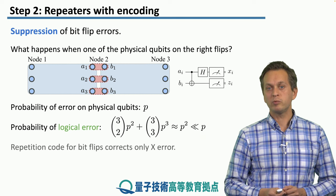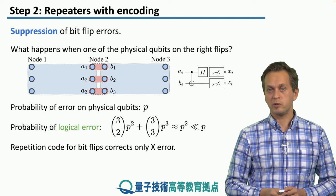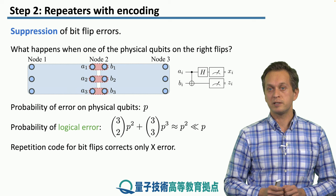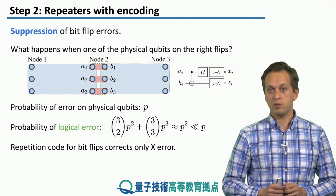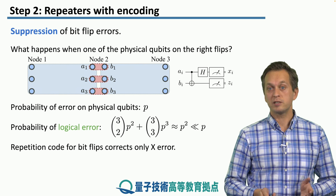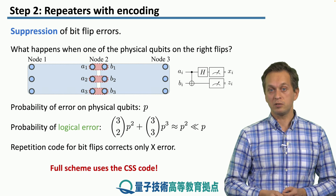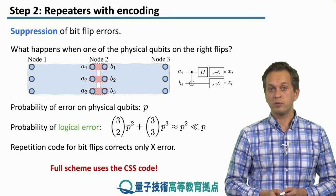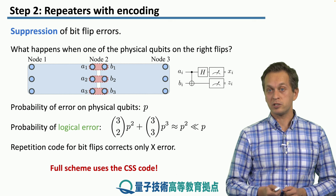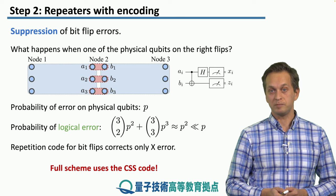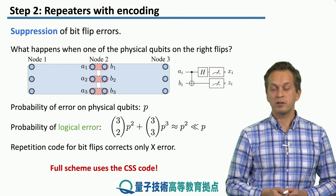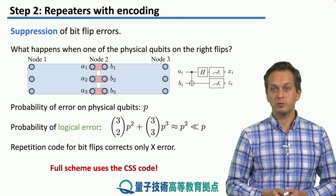We've only worked with the repetition code, but all of these ideas and all three steps also apply for more general codes, such as CSS codes. This scheme for 2G repeaters was initially devised for such a code. This concludes our discussion of 2G repeaters.